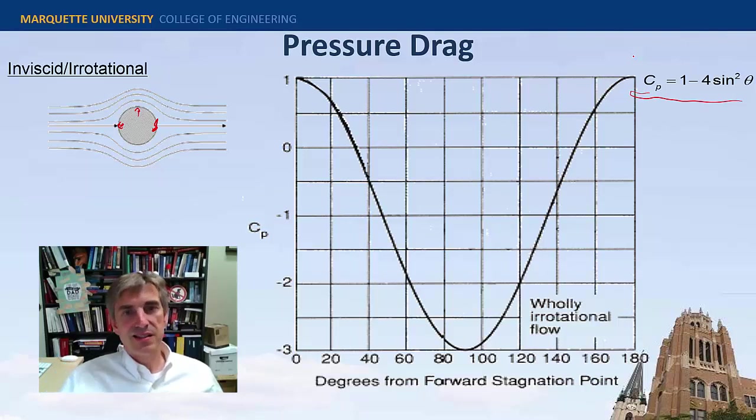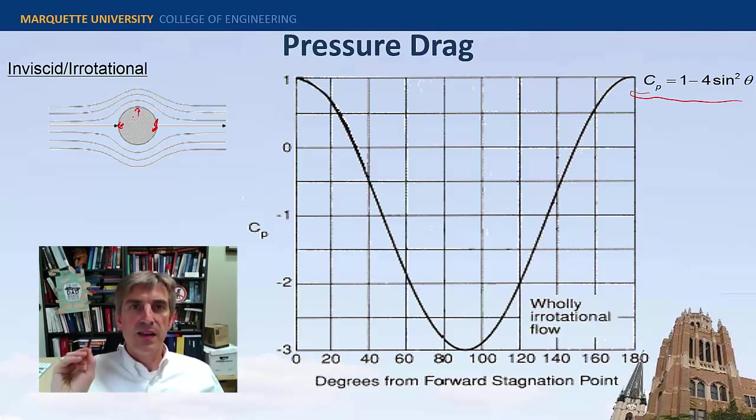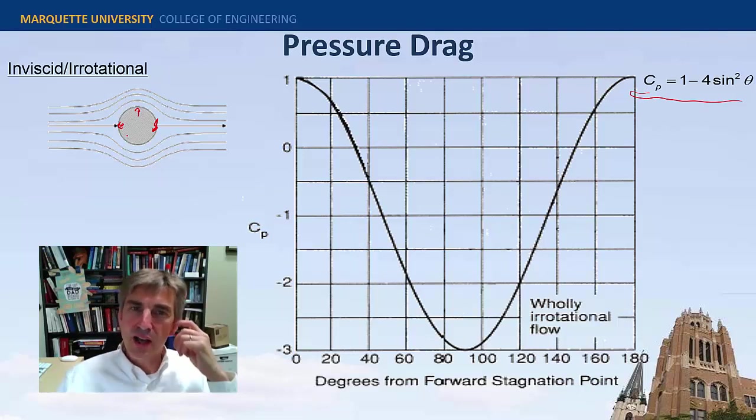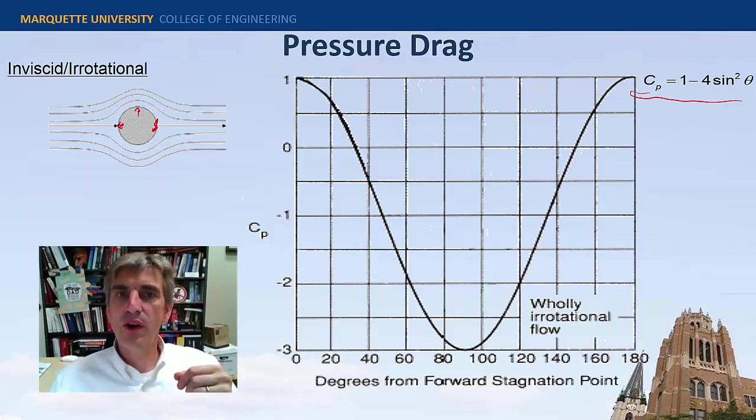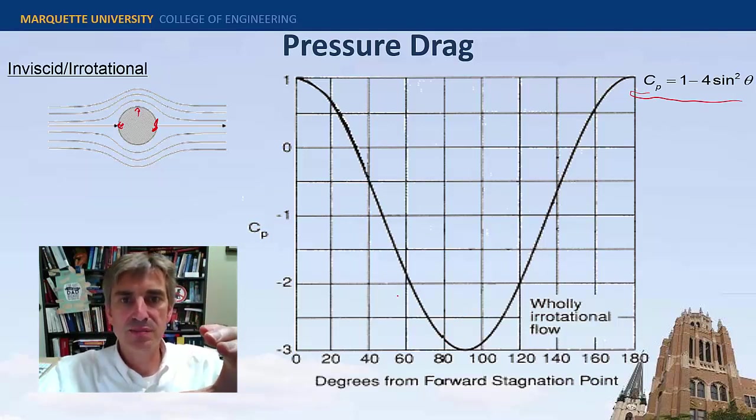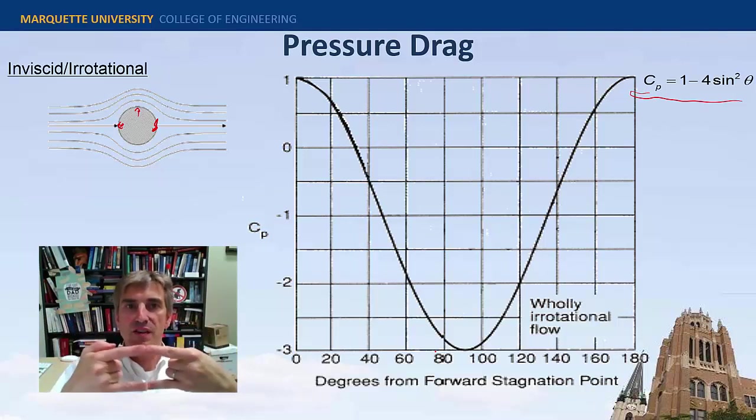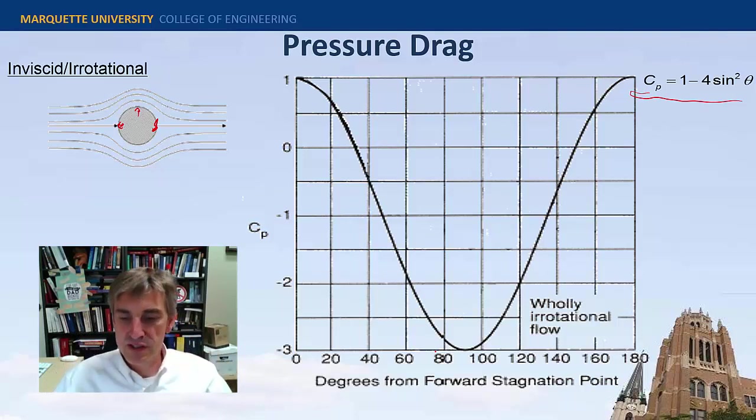So when these kinds of analyses were first done, people didn't even know the no-slip boundary condition was true. So they didn't realize that this is irrotational or inviscid because the no-slip boundary condition says that there should be a gradient of velocity along this cylinder. So they're like, hey, why are we not getting drag? What this says is that the pressure profile for and after the cylinder is the same. So that means you get all this pressure, right, all this positive pressure, and then some negative pressure acting on the front of the cylinder. And you have the same positive and negative pressure acting on the back of the cylinder. So they cancel each other out. So there's no pressure drag for the inviscid flow.